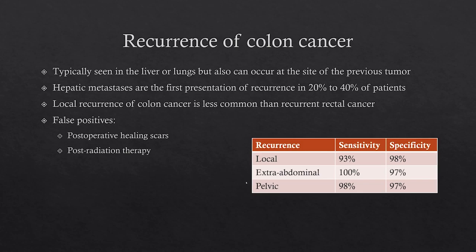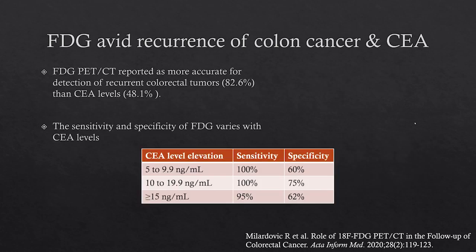Sensitivity and specificity for recurrence: local has been reported as about 93% to 98%; extra-abdominal 97% to 100%; pelvic 97% to 98%. FDG uptake in recurrence of colon cancer has a relationship to CEA levels. FDG has been reported as more accurate in detecting recurrence compared to CEA, with sensitivity and specificity varying depending on the corresponding CEA level. More data would probably be needed to better understand this relationship.